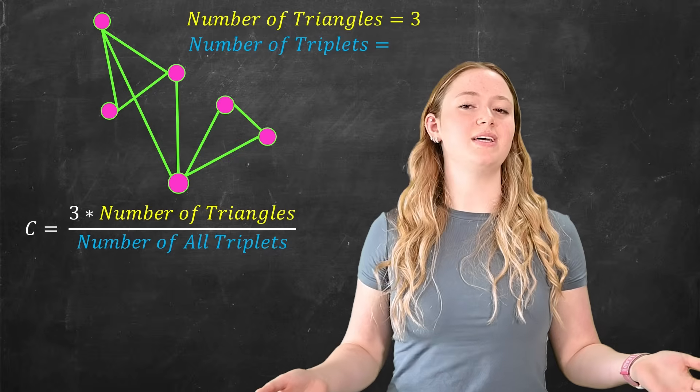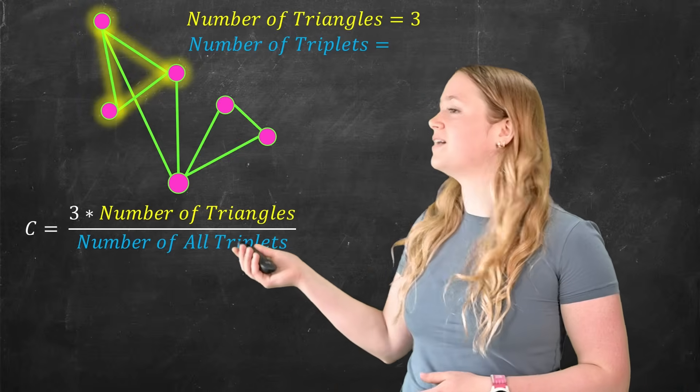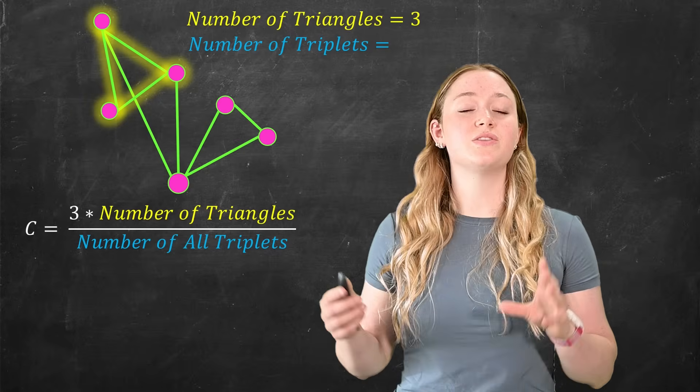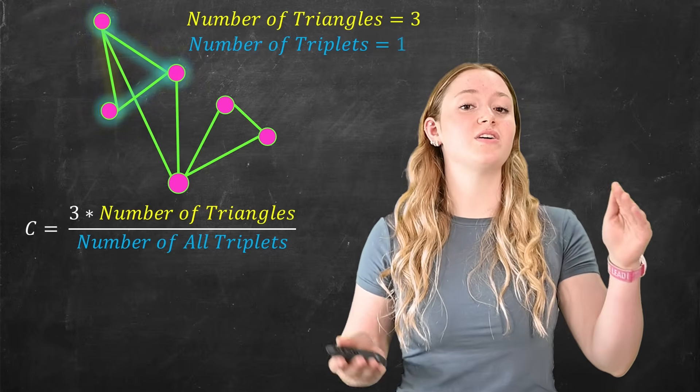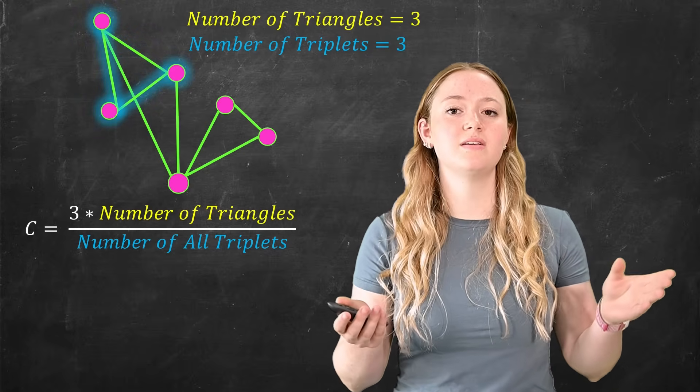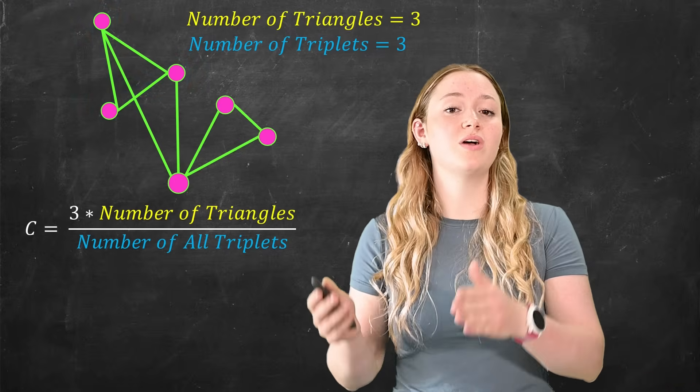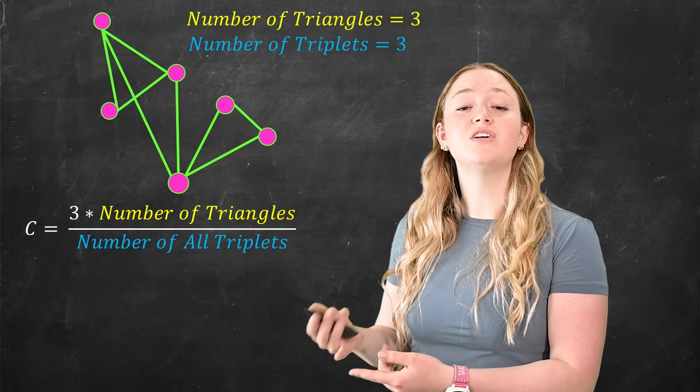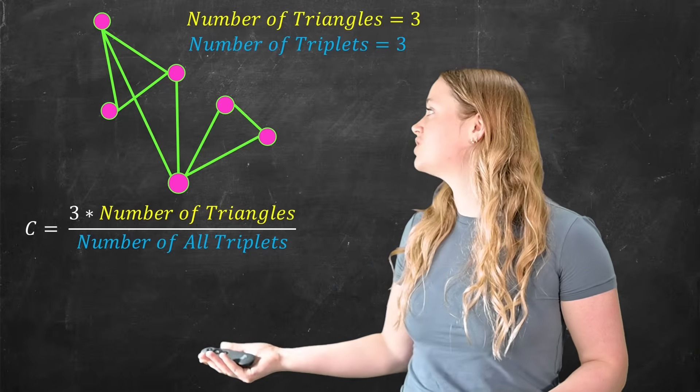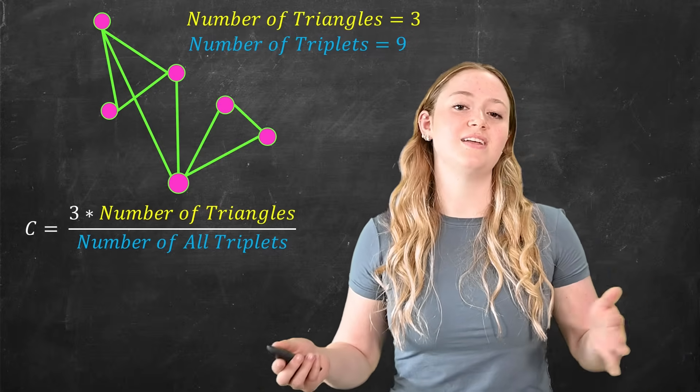But what about the triplets? So let's start by looking at this triangle right here. This triangle has three different vertices, which the three different vertices can have three different combinations and orders that would make up three different triplets. So each triangle contains three triplets. So we've got that for our first triangle, now we've got it for the second triangle, and we've got it for our third triangle. So we've got nine in total.